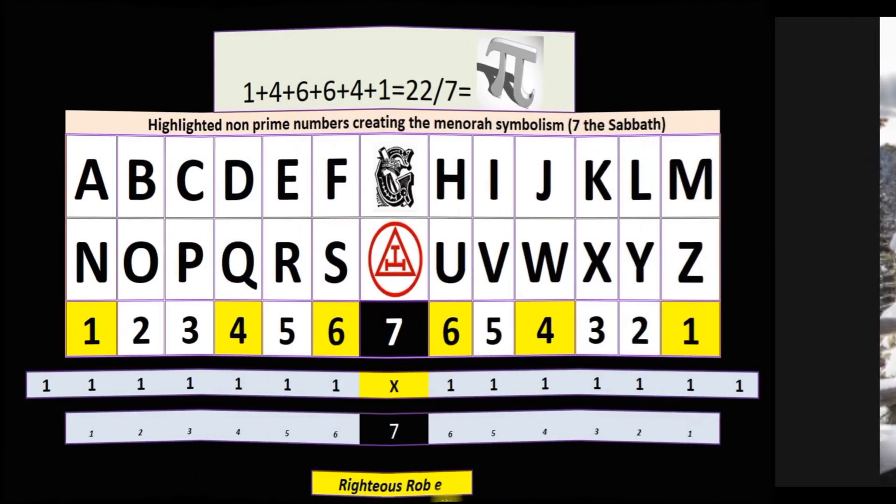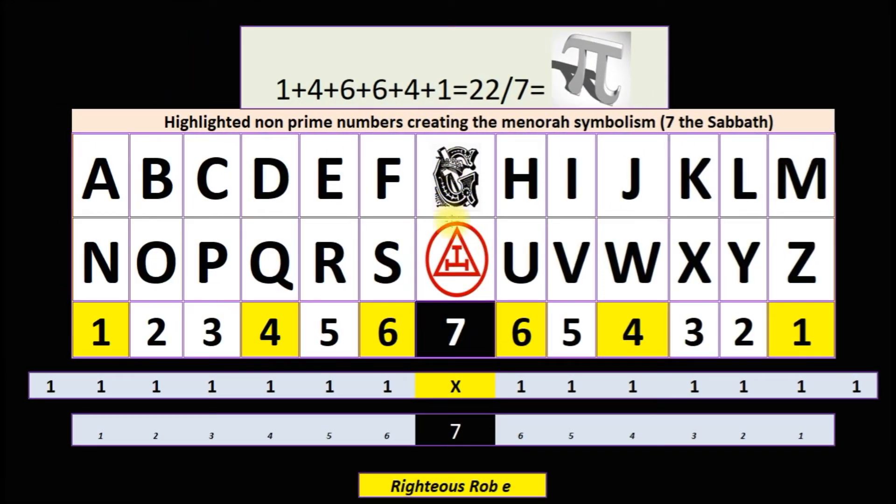The English septenary cipher, septenary seven. The G and T have letter values of seven, one seven times multiplied by one seven times. The reflective nature of one. The non-prime numbers one, four, six, six, four, one creating the menorah symbolism, adding up to a sum total of twenty-two divided by the seven. Septenary encodes pi two three four.